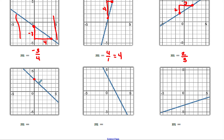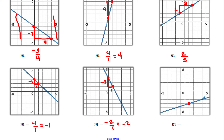The next line goes down from left to right: down one, over one — negative one over positive one simplifies to negative one. The following line also has a negative slope, going down two over one, which simplifies to negative two. The last line: up one over three — slope is one-third.